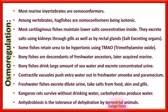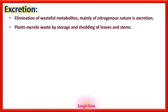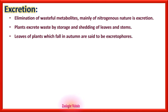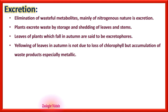Anhydrobiosis is the tolerance of dehydration in terrestrial animals. Excretion is the elimination of wasteful metabolites, mainly of nitrogenous nature. Plants excrete waste by storage and then shedding of leaves and stems. Leaves that fall in autumn are called excretophores because they have large amounts of waste products stored, and shedding removes those waste products from the plant.